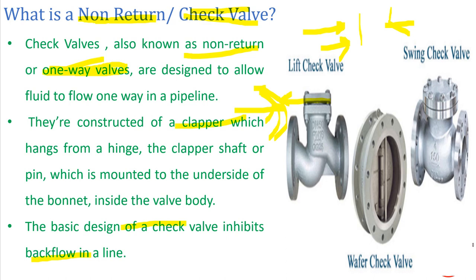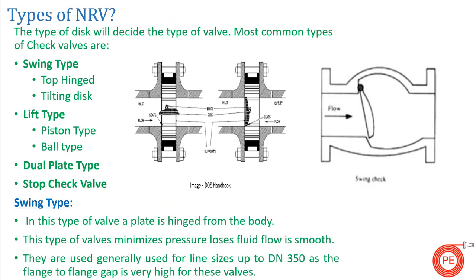The types of NRV used in the industry are: swing type — the most common, which has two sub-types: top-hinged and tilting disc; lift type — also with two sub-types: piston type and ball type; dual plate type — used when there is a space constraint; and last is the stop check valve.